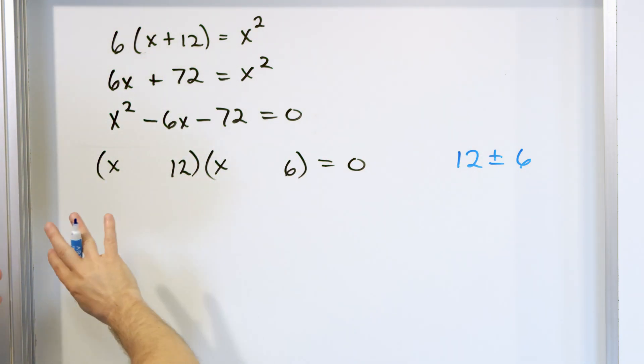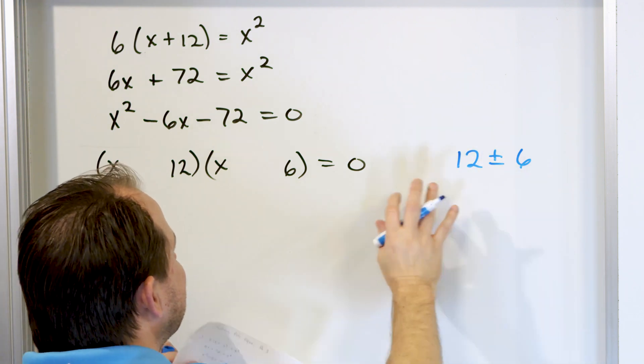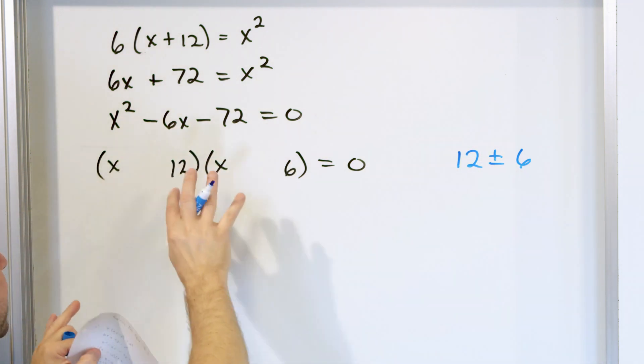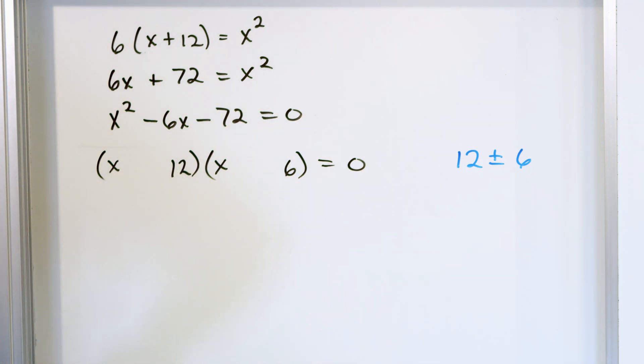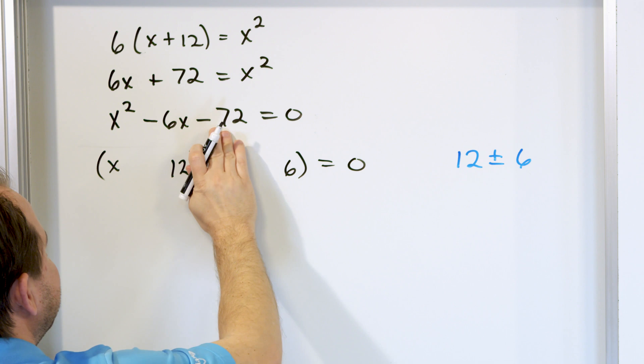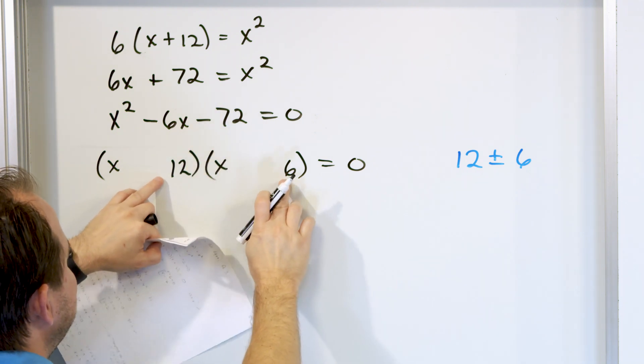Now, there's a negative here. I'm ignoring all signs when I do this. I just want to look at the magnitude of the numbers to see if it's even possible. So these numbers, it appears that it might work, and so I have to choose my signs.